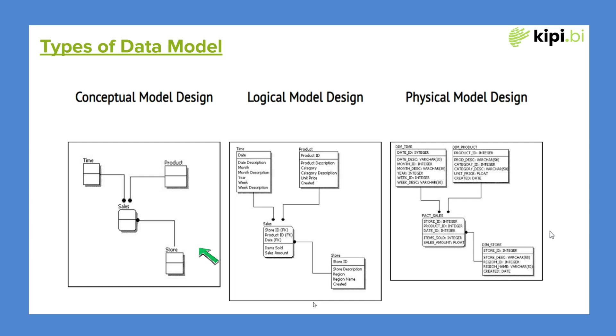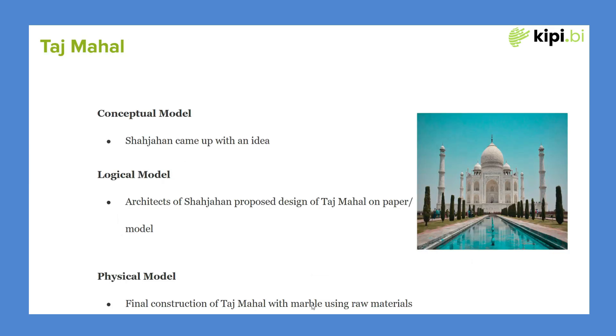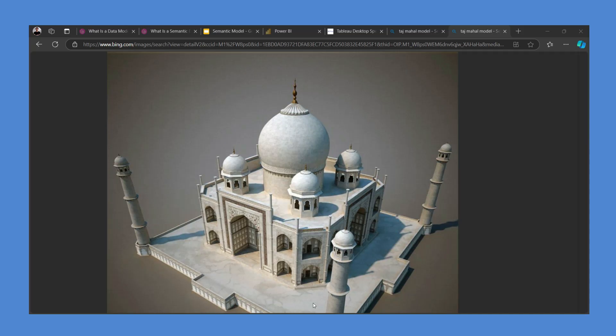Now let's go back to the Taj Mahal — what about the logical model? Architects of the Taj Mahal proposed a design on paper. You may have seen those Taj Mahal models, for example a 3D model like those displayed in Agra. This particular model was more instrumental in creating the actual Taj Mahal than the conceptual model, because it has the proper shape and probable color. We call this the logical model because you are going to make use of this logic.